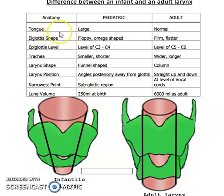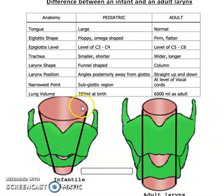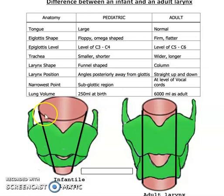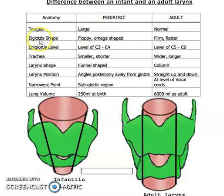Above the larynx there will be the tongue. The tongue in the infant is usually large, while in the adult it is normal size. The tongue can fall backwards and close the laryngeal inlet, which is guarded in front by the epiglottis, behind by the arytenoid cartilage, and on either side by the aryepiglottic folds. So the tongue in the infant or pediatric age group is usually large.